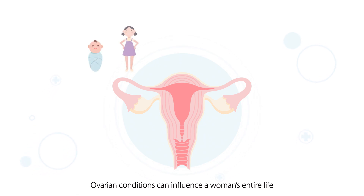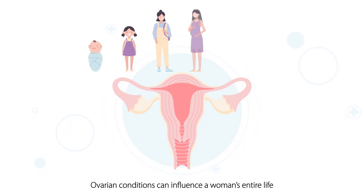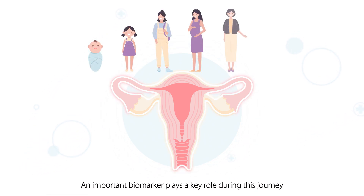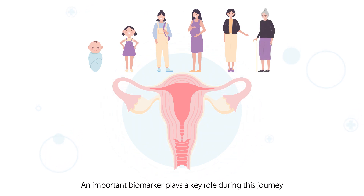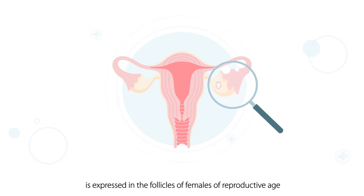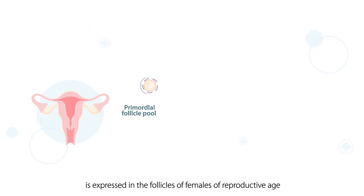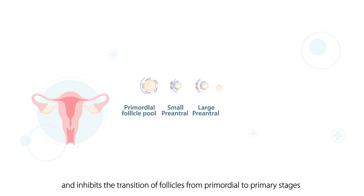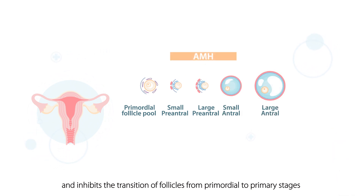Ovarian conditions can influence a woman's entire life. An important biomarker plays a key role during this journey. AMH, the anti-Müllerian hormone, is expressed in the follicles of females of reproductive age and inhibits the transition of follicles from primordial to primary stages.